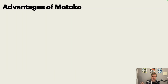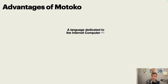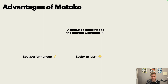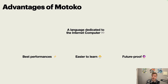So what are the advantages of using Motoko? A dedicated language for the internet computer gives you several advantages. The main ones are: it gives you the best performance for the platform, and it makes it easier to learn because you are learning the platform and the language at the same time. The third advantage is that Motoko is future-proof because it actually evolves with the internet computer — whenever new features are released, the language evolves to make it as easy as possible for developers to use those features.